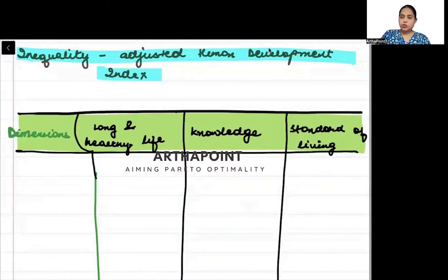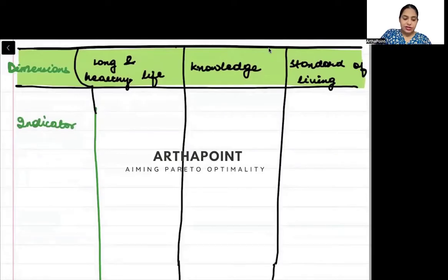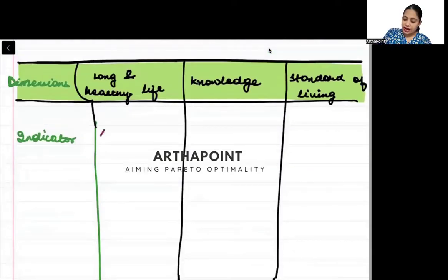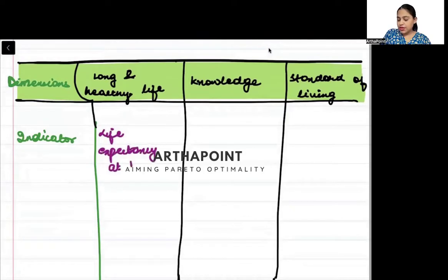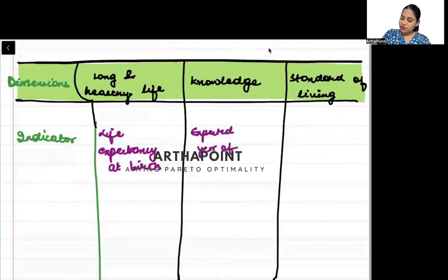When we talk about the indicators, for long and healthy life the indicator used is life expectancy at birth — how long will a person live, what will be their expected life. For knowledge, you again have two things: one is expected years of schooling, just like in the Human Development Index.